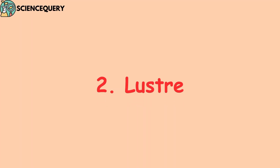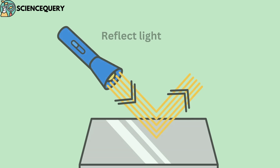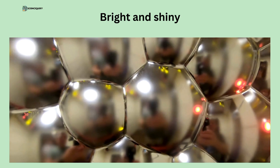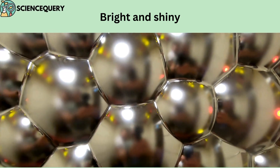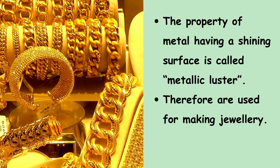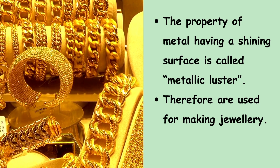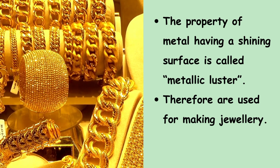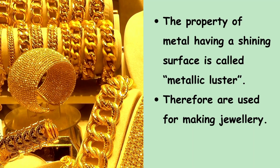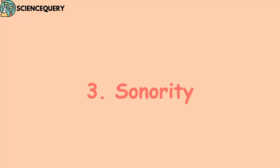The next property of metal is metallic luster — that is its ability to reflect light from the surface. Metals are bright and shiny in nature. The property of a metal having a shiny surface is called metallic luster. Therefore, metals are used for making jewelry.